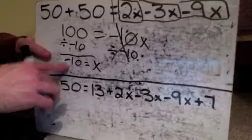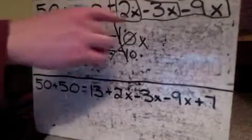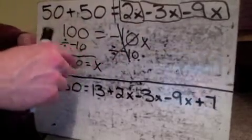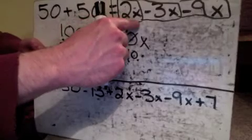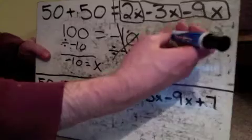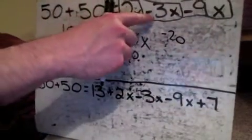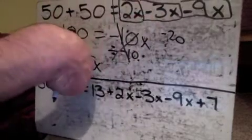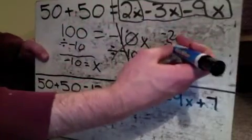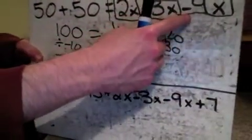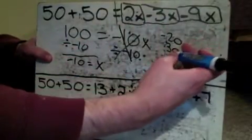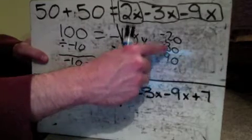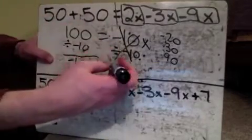I can go back through and verify. 50 and 50 is 100, so whatever this side is, it has to equal 100. 2 times negative 10 is negative 20. Negative 3 times negative 10 is positive 30. Negative 9 times negative 10 is positive 90. If I add these together: 90 and 30 is 120, 120 minus 20 is 100. So this one worked out just fine — x equals negative 10.